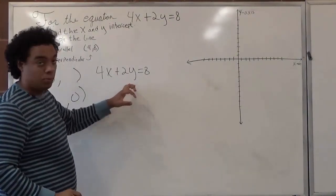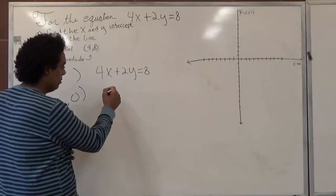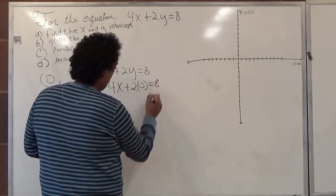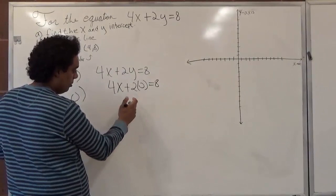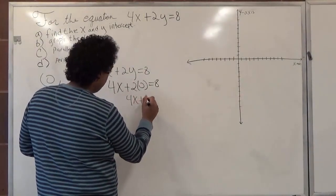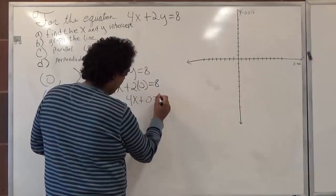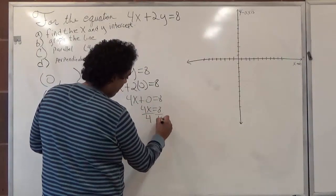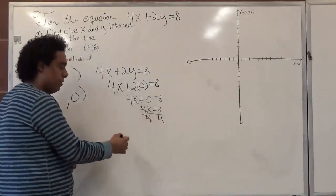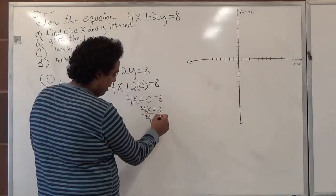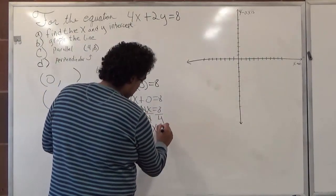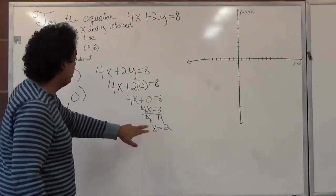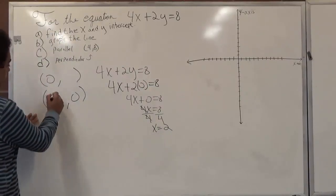So let's start with our x. If y is equal to 0, we can set it to 0 and see what our x will give us. 4x plus 2 times 0 is equal to 8. Now, 2 times 0 equals 0, so we're left with 4x equals 8. We can divide both sides by 4, and 8 divided by 4 is 2, so x equals 2. So when y is equal to 0, x is equal to 2. So that's our x intercept, which would be right here, 2 comma 0.